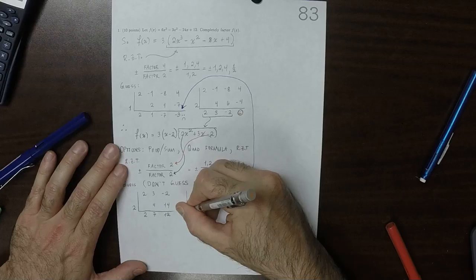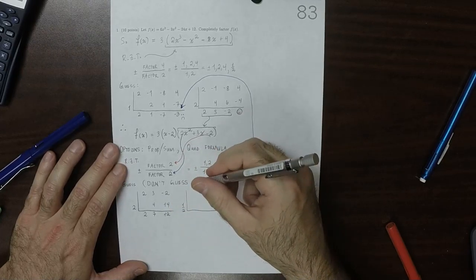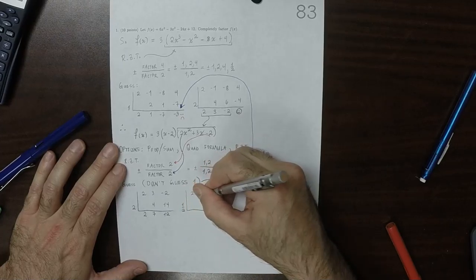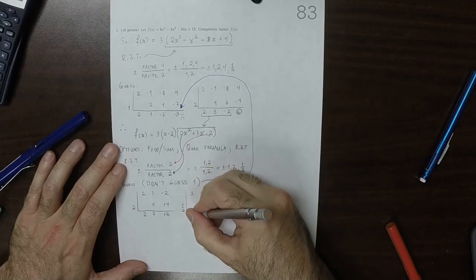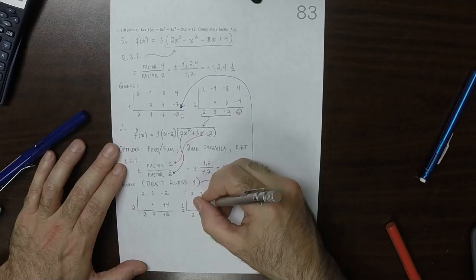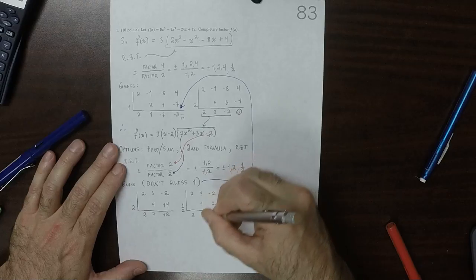How about half? Okay. 2, 3, negative 2. So then carry, and then multiply, add, multiply, oh, oh, lucky.